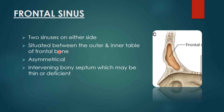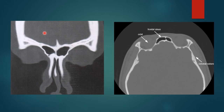Coming on to the frontal sinus: there are two sinuses on either side, situated between the outer and inner table of the frontal bone. This is the anterior table, this is the posterior table, and between them there is an air-containing cavity called the frontal sinus. They are usually asymmetrical, with an intervening bony septum between them that can be very thin or even deficient. The coronal CT image shows bilateral frontal sinuses with an intervening bony septum, and the axial CT image also shows bilateral frontal sinuses with the intervening septum.